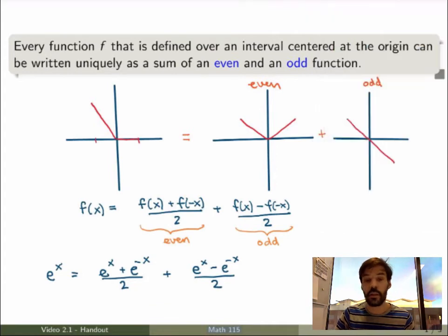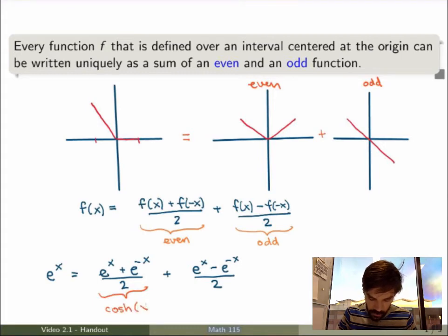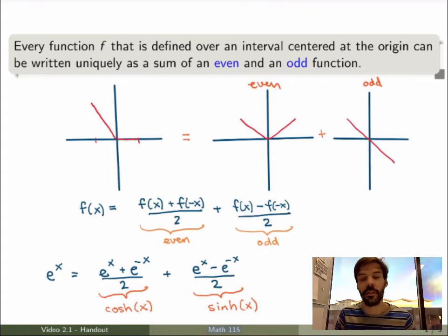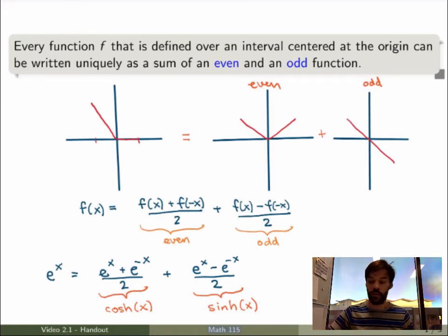Now it turns out that this decomposition here of the exponential function is extremely useful, and in fact is so useful that it's been given its own name. And the even part here is exactly what we call the hyperbolic cosine function, or cosh of x, and the odd part here is what we call hyperbolic sine function, or sinh of x. This is how these things are defined, as being the even and the odd part of the exponential function. But let's now see what they look like in terms of graphs.